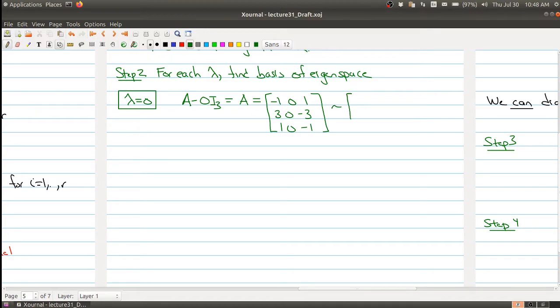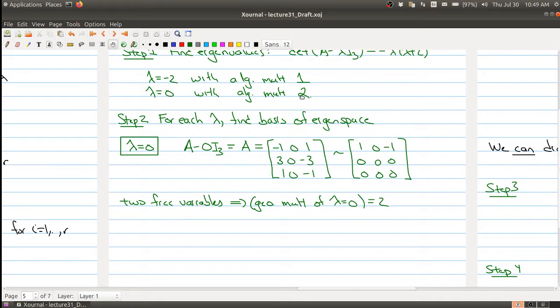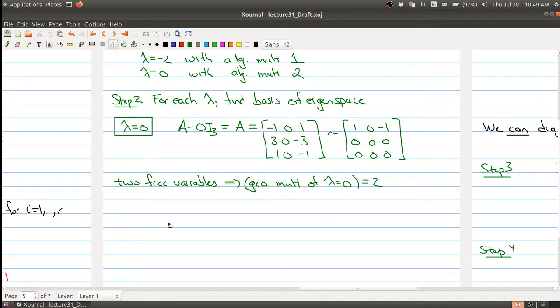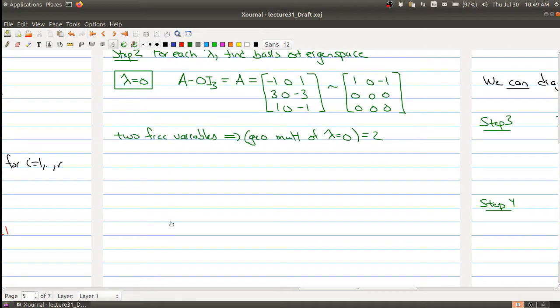This is the coefficient matrix, and I can row reduce it to 1 0 minus 1, 0 1 0, and 0 0 0. From this we get two free variables. So we already know the dimension of the geometric multiplicity. This implies that the geometric multiplicity of lambda equals 0 is equal to 2. We're off to a good start because the algebraic multiplicity of lambda equals 0 is 2 and the geometric multiplicity is 2. If these were different, we would say I can't diagonalize and have to stop. But because they're equal, we can continue on with the process.